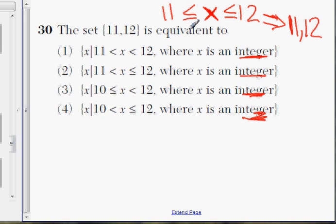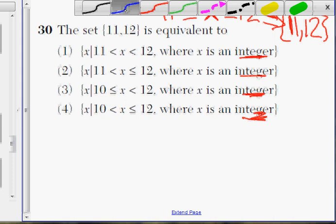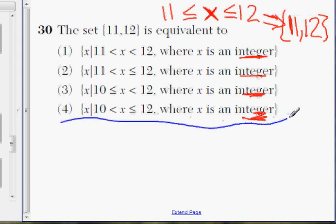It needs to be greater or equal to 11, and it can't be more than 12. The numbers I'm looking for is really just 11 and 12. Which one of these choices will give you 11 and 12? If you look down, there's only one. It's actually choice 4 here.